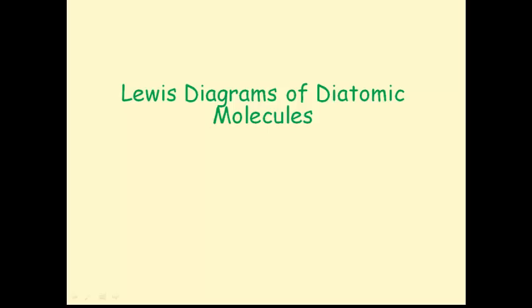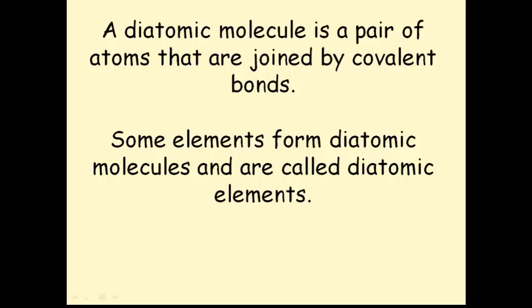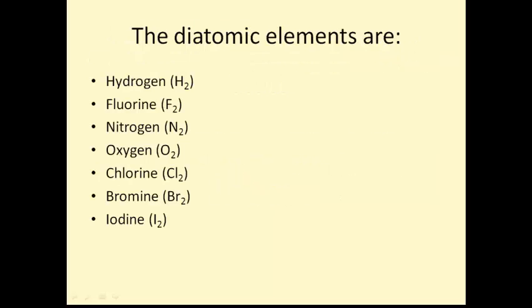Lewis diagrams of diatomic molecules. A diatomic molecule is a pair of atoms that are joined by covalent bonds. Some elements form diatomic molecules and are called diatomic elements. These are the diatomic elements: Hydrogen, fluorine, nitrogen, oxygen, chlorine, bromine, and iodine. You should memorize this list.